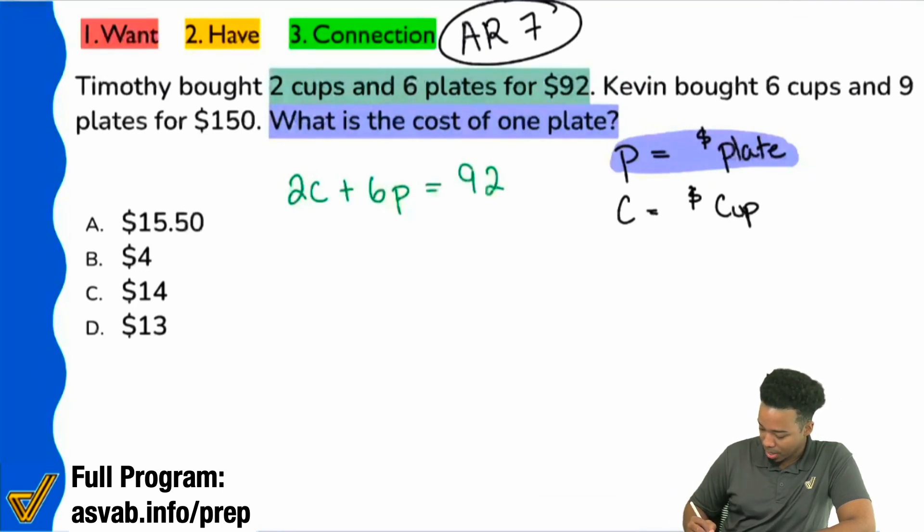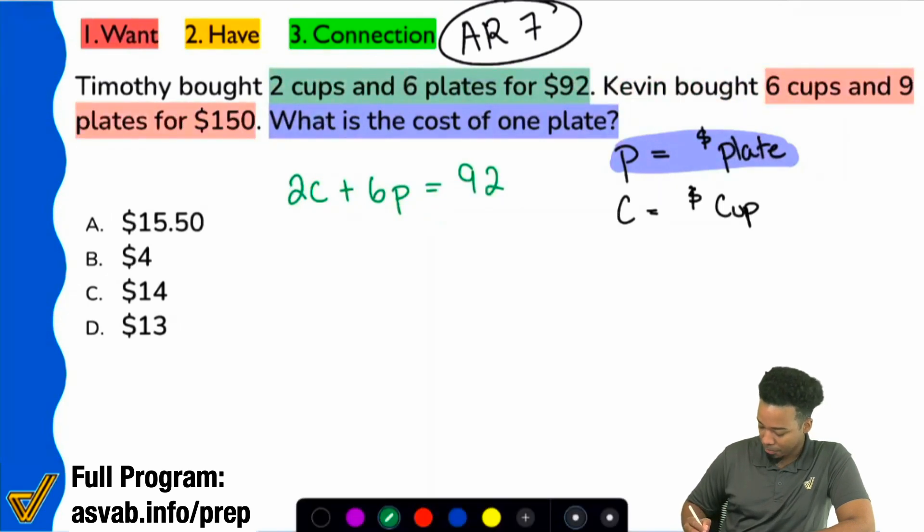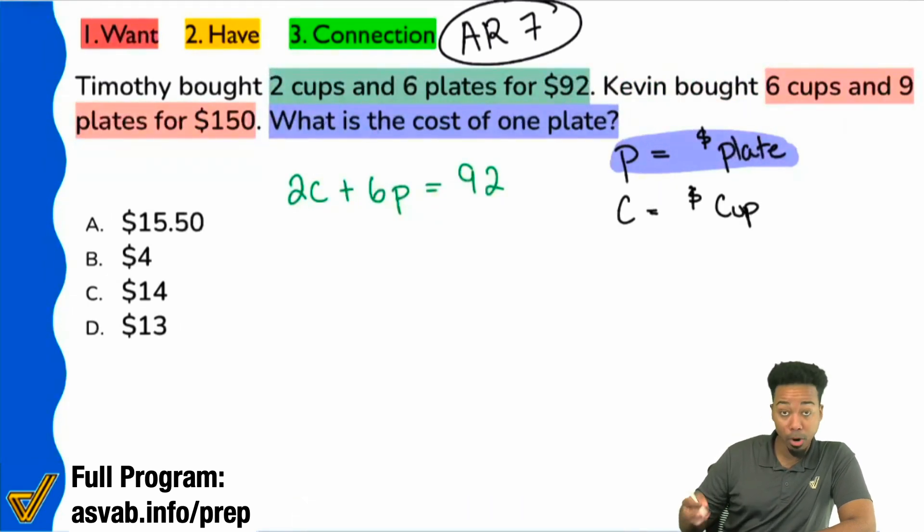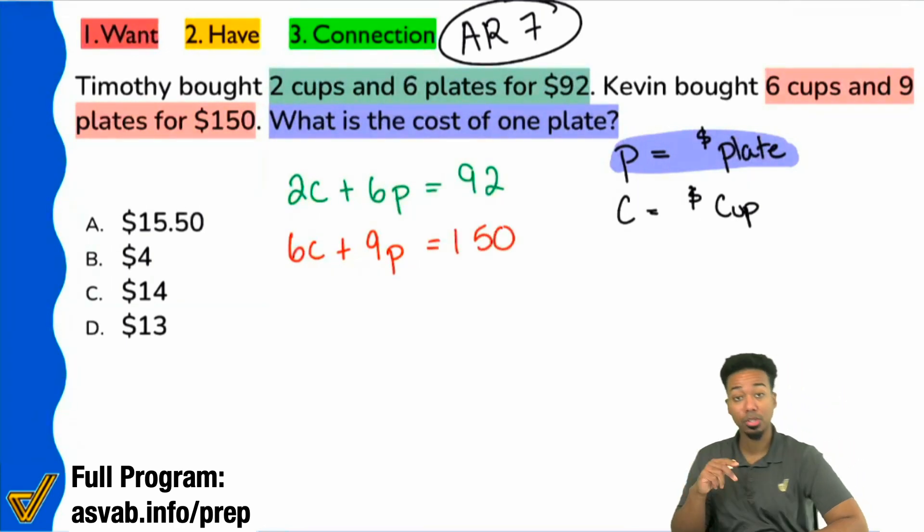And then over here in red, we see that it says Kevin bought six cups and nine plates for $150. So I'll mark that out as, hey, to get that total price, we have 6C + 9P = $150. So once we're able to translate the English into math, which is a skill that everyone needs to have if you expect success here, make sure to write that down that you're going to practice. But once we have that set up, now we can move forward to using our techniques to solving a system of equations.